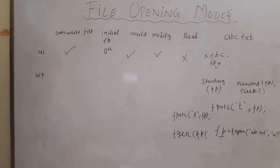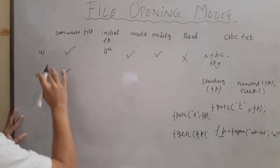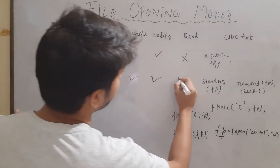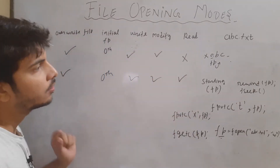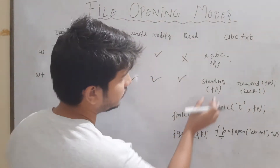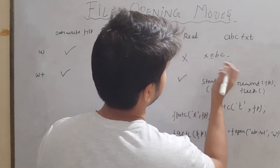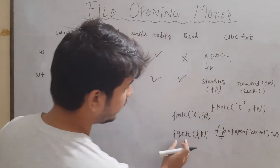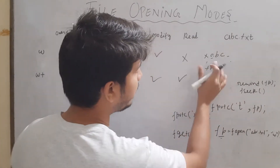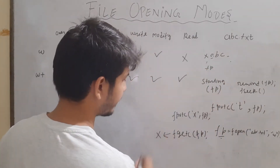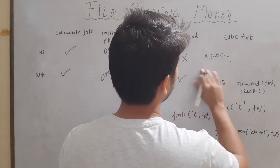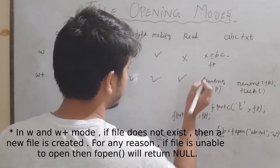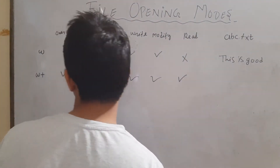Next is 'w+' mode. It is similar to 'w' mode except that the read operation is also allowed. So if you bring the file pointer to the beginning and write fgetc(fp), it will return the character 'x' and increment the file pointer. So read operation is allowed in 'w+' mode.